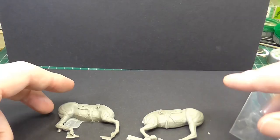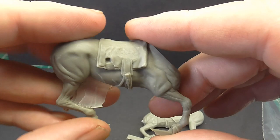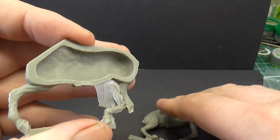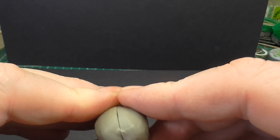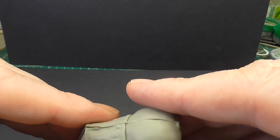Right, first two bags opened. We have our horse in two halves. So I would imagine we're going to have to be doing a bit of filling, sanding, whatever. Well, we'll work our way around it anyway.